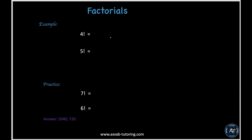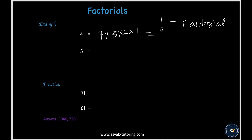In this section we'll learn about factorials. The exclamation mark is called the factorial sign. To find a factorial, multiply the number down to 1. For example, 4 factorial equals 4 times 3 times 2 times 1, which gives 12 times 2 equals 24. For 5 factorial: 5 times 4 times 3 times 2 times 1 — try the two practice problems and check your answers.